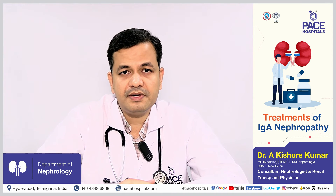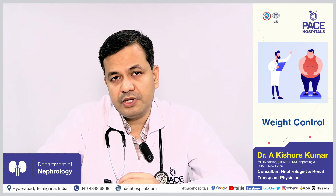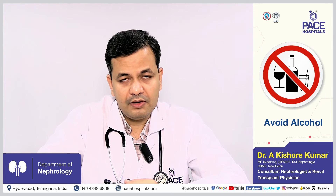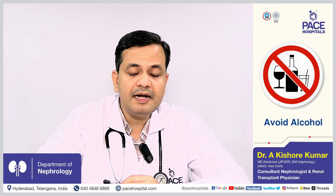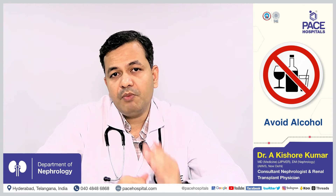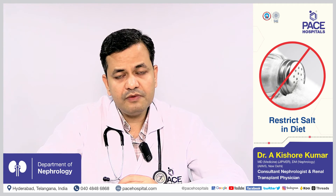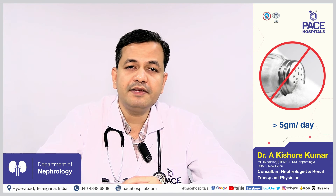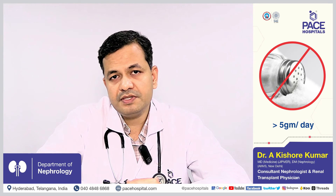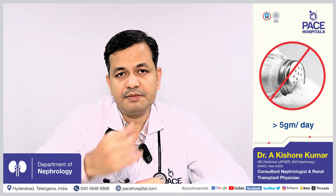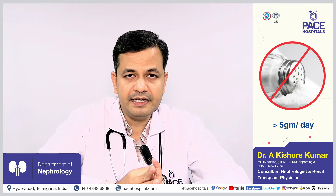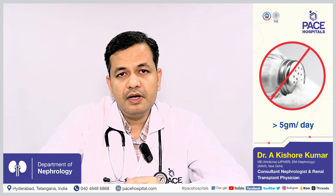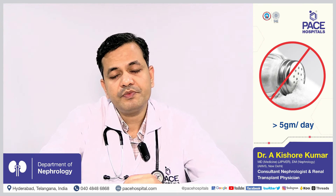The first approach is lifestyle changes. We advise weight control if the patient is overweight or obese. The second is to stop smoking and avoid alcohol. Third, if cholesterol or lipid levels are abnormal, those need to be controlled. Importantly, we restrict salt in the diet to less than 5 grams per day — equivalent to 1 teaspoon in 24 hours — as excess salt leads to increased blood pressure, more protein loss in urine, and greater kidney damage. We also advise a predominantly plant-based diet.